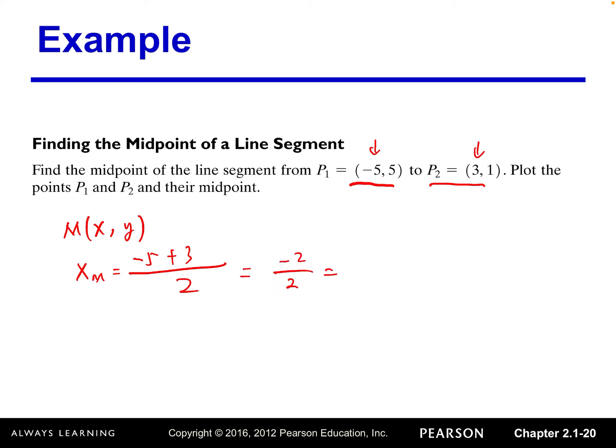That's negative 2 over 2 which gives us negative 1. And then the Y coordinate of the midpoint, that's half of the two Y coordinates of the endpoints. That's 5 plus 1.